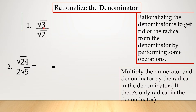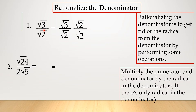Look at number 1. I have here square root of 3 over square root of 2. We are not allowed to have a final answer with a radical sign, that's why we need to rationalize. So what you're going to do is multiply both numerator and denominator by the radical in the denominator — that is times square root of 2. Square root of 3 times square root of 2 equals square root of 6. Square root of 2 times square root of 2 equals square root of 4. The square root of 4 is 2, so the final answer is square root of 6 over 2.